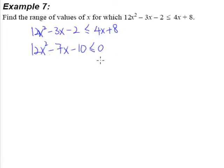So what is left to do here will be, of course, we have to factorize. So after you factorize, you will get (3x + 2)(4x - 5) will be less than or equal to 0.